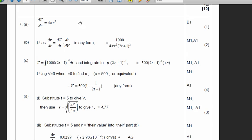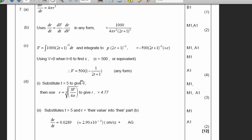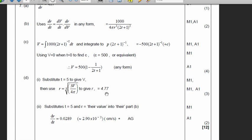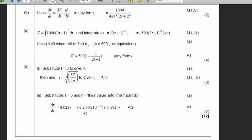The mark scheme, this is the derivative, this is the chain rule, this is correct, then this is the integration, c equals 500, a1, we have to mention that, then we have t equals 5, r equals 4.77, and we have this value.